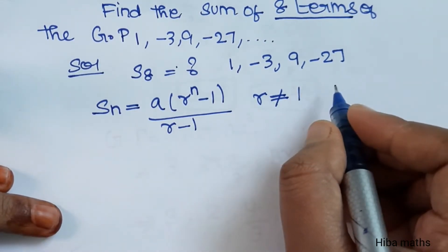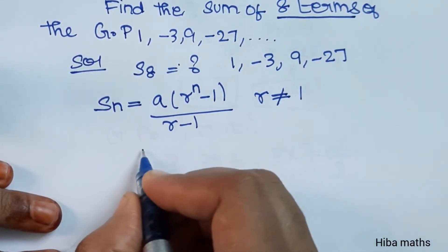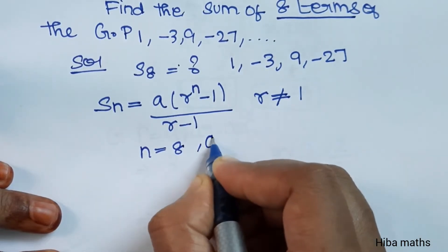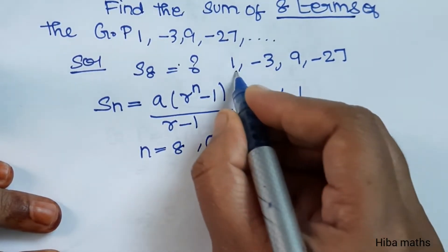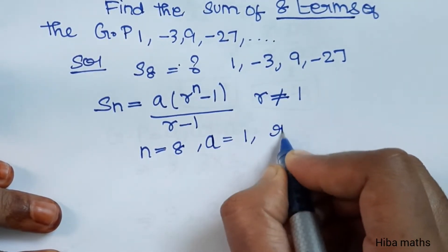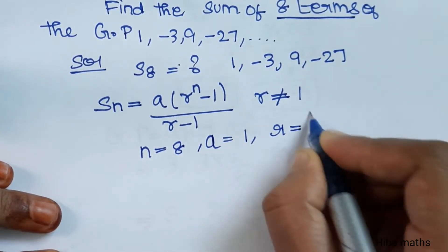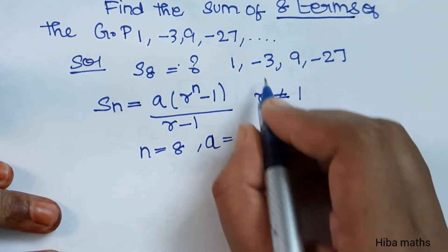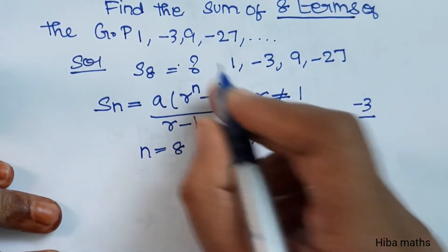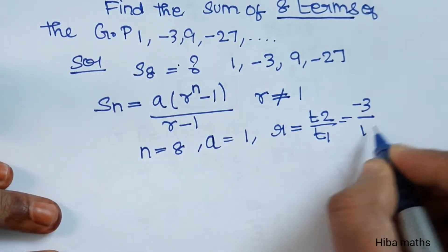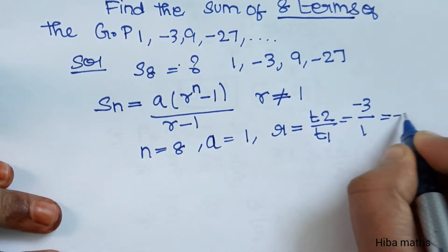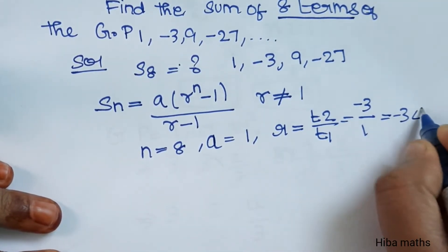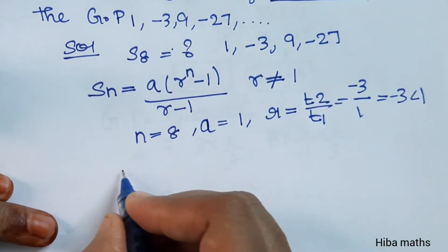From the series, a is equal to 1. To find r, we calculate t2 divided by t1: t2 is 3 and t1 is 1, so r is equal to 3. And n is equal to 8.